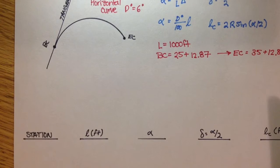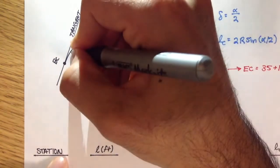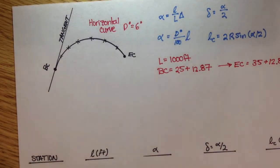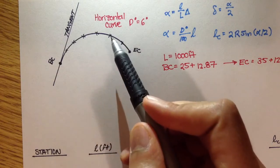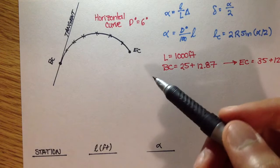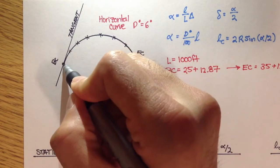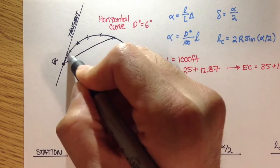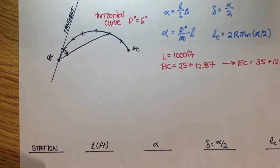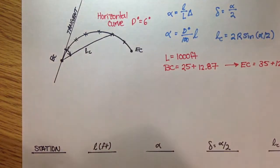What we want to do in this example is figure out the deflection angles and chord lengths for various points along this curve. We want to find the stations of all these points, the arc length from BC to each point, what alpha is, and the deflection angle — which is the angle from the tangent line to a line drawn from BC to any point along the curve. Finally, we want LC, the chord length from BC to each of these points.